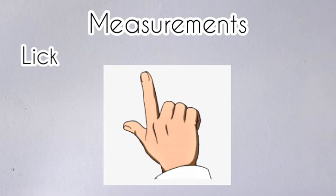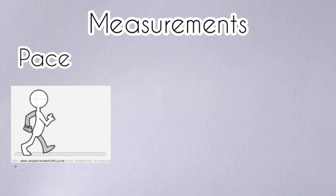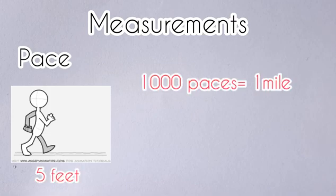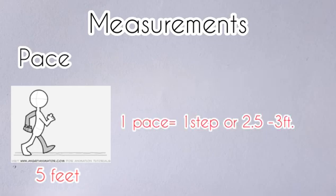And now let's have the last one, which is the pace. The ancient Roman soldiers marched in paces, which were the length of a double step, about five feet. One thousand paces was a mile. Today a pace is the length of one step, 2.5 to 3 feet.